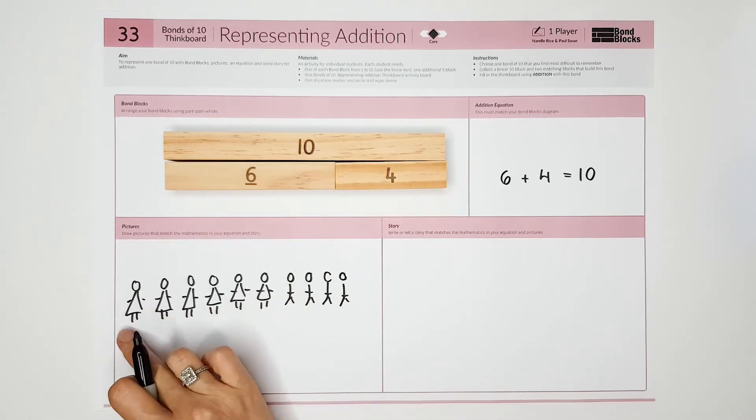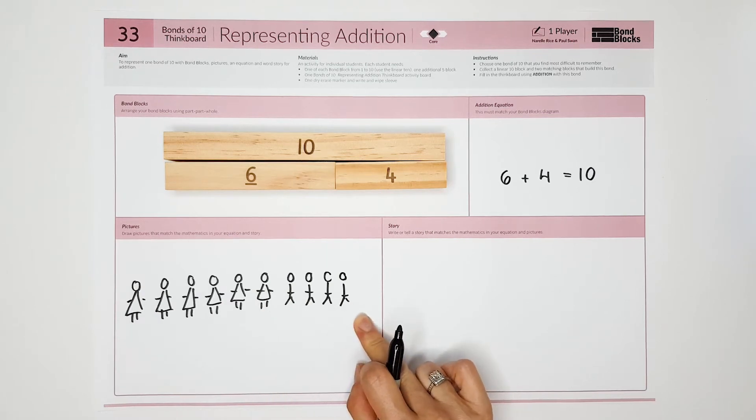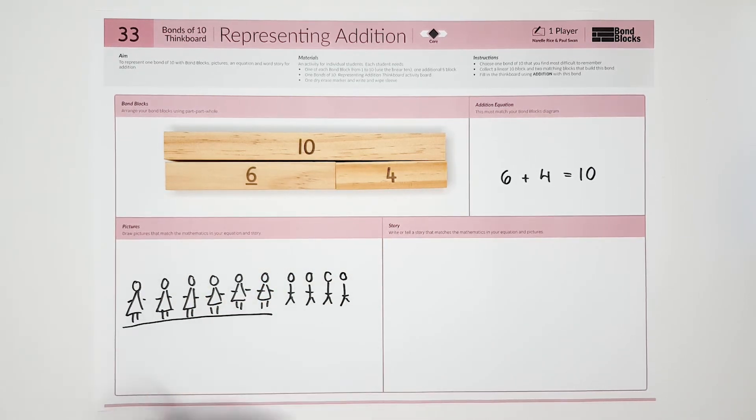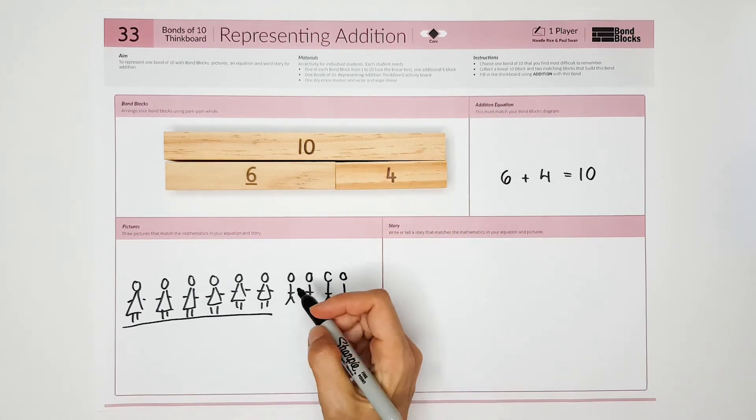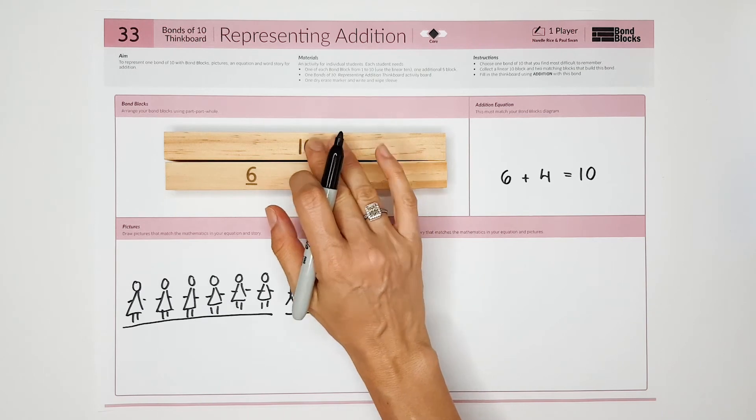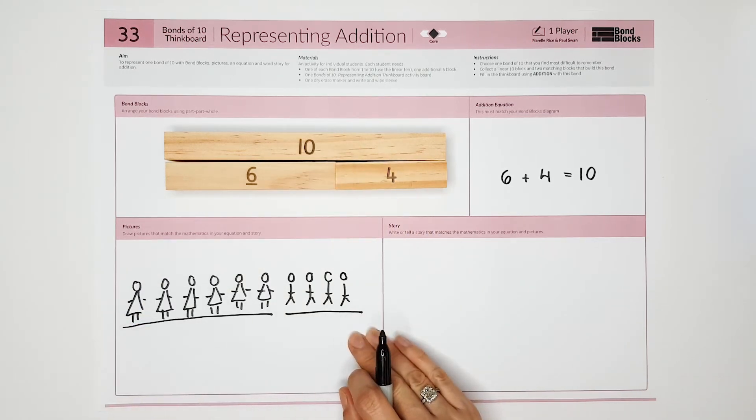The 10 is all of the children. So my part of 6 is the girls, my part of 4 is the boys, and the whole of 10 is the whole line.